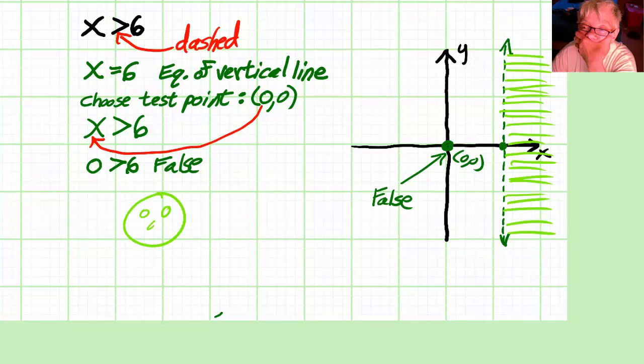And so we're done. We have graphed the linear inequality in two variables that just has one.